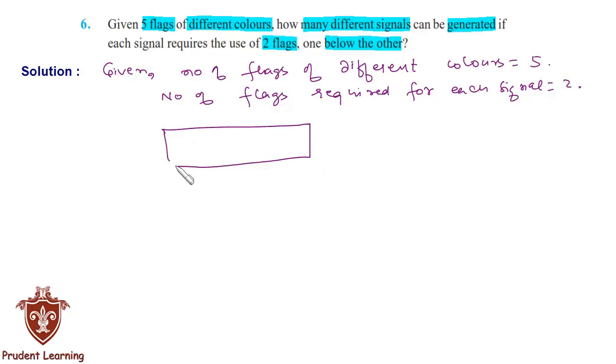So, let's draw 2 boxes representing 2 flags of each signal. This is the upper part of the signal and this is the lower part of the signal.